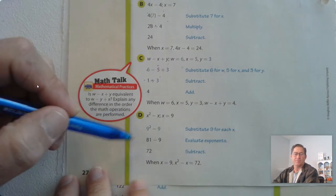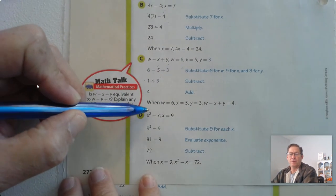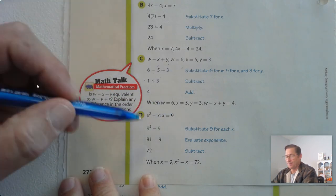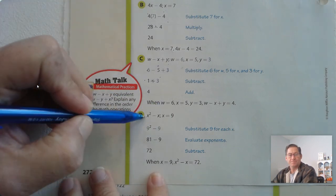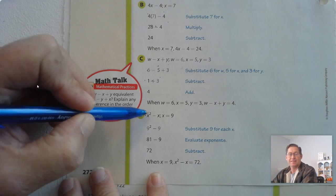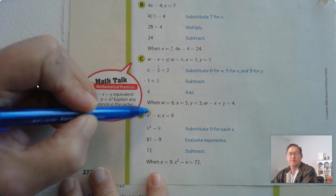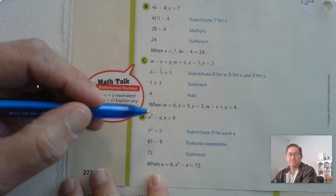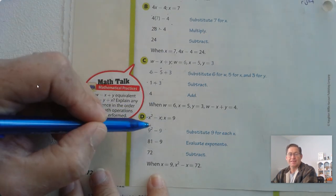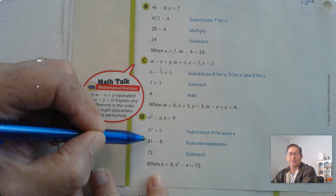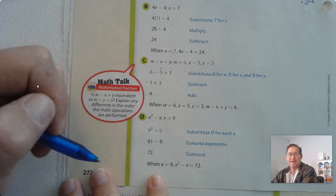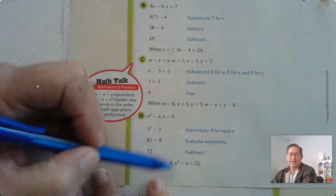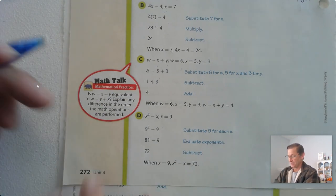And our final example: we have x squared, or x to the second power, minus x, when x equals 9. Substitute 9 for the x's, and we get 9 squared minus 9. We do exponents first in this problem, and 9 times 9 is 81. Then we have 81 minus 9. Subtract, and we get 72. So when x equals 9, x squared minus x is 72.